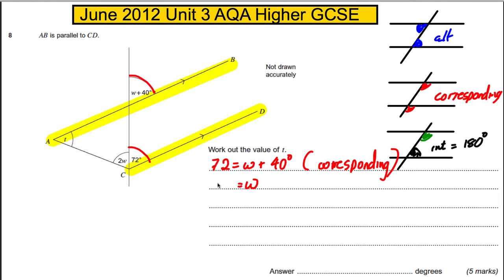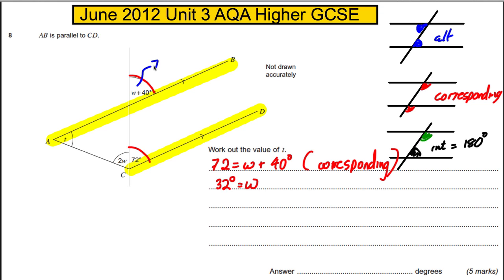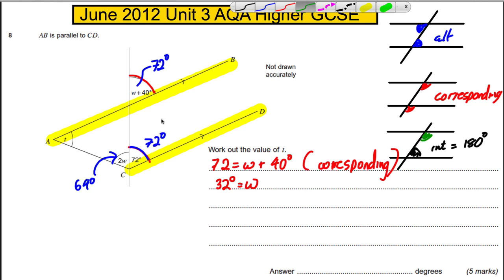State the rule you're using — corresponding angles — and this helps you find W. Subtracting 40 from both sides gives W equals 32 degrees. So this angle here is 72, and this one is also 72. Therefore this angle here must be twice 32, which is 64 degrees.